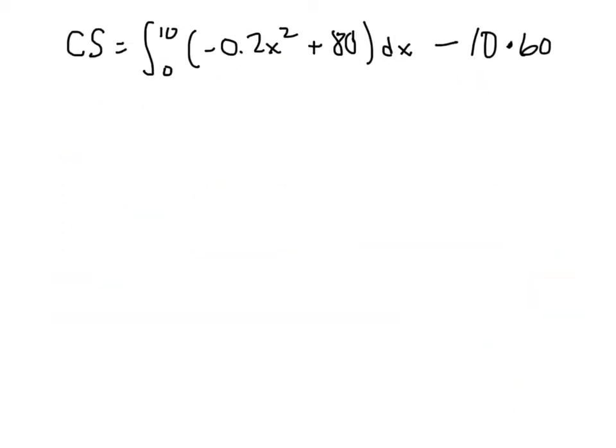So here's a fresh screen with that consumer surplus formula written down. Now, last week in our discussion, I showed you how to use the computer to calculate this antiderivative here, the area under the curve between 0 and 10. And so I went ahead and did that just to save myself some time. And this came up to be 733.3 repeating, or 733 and a third.